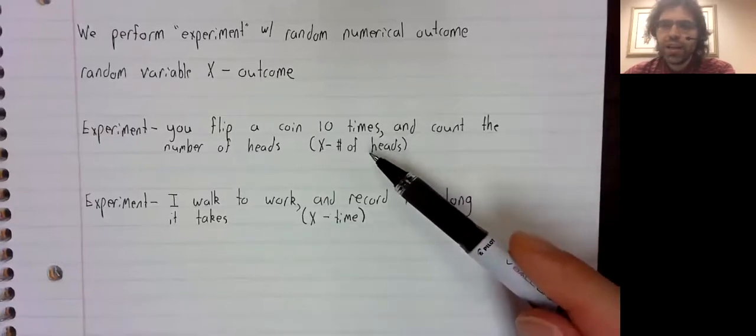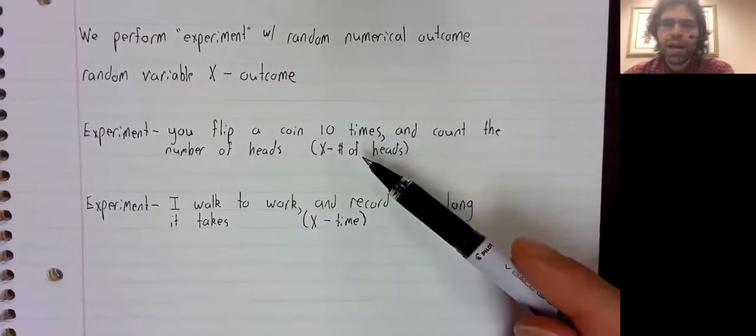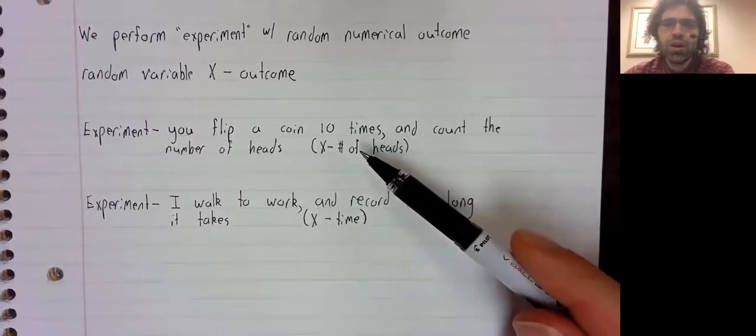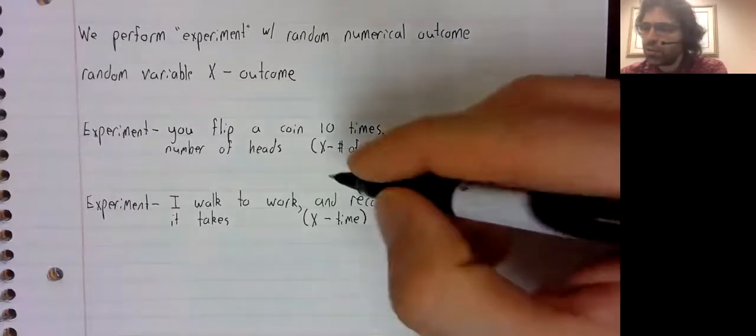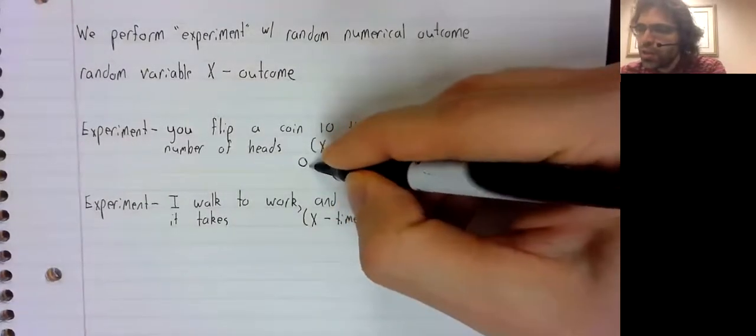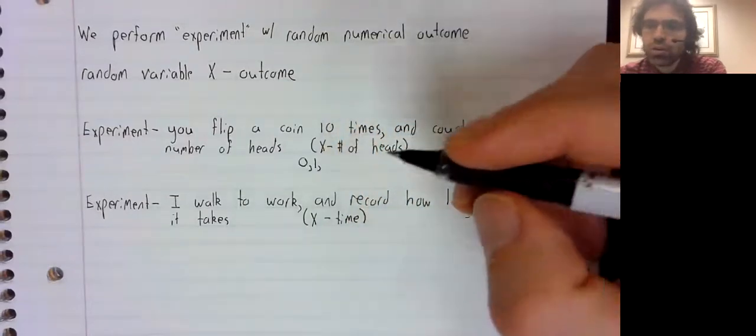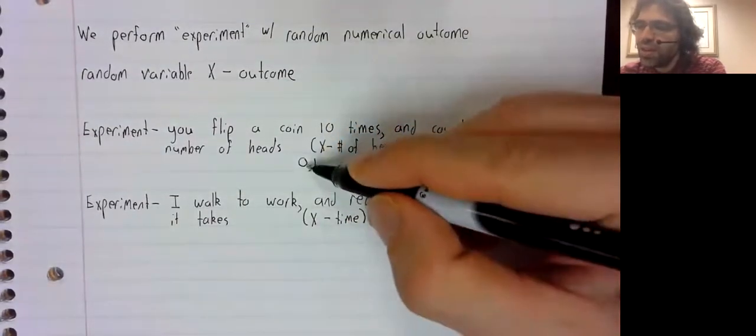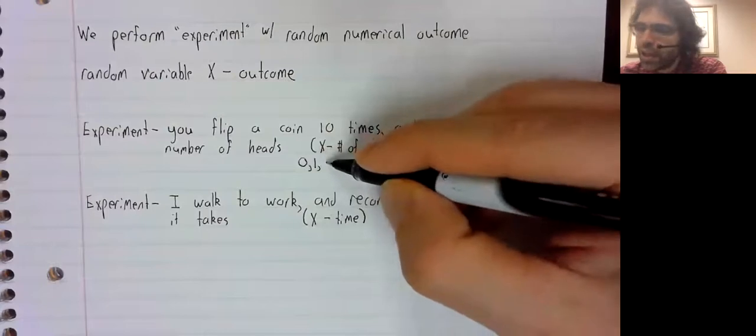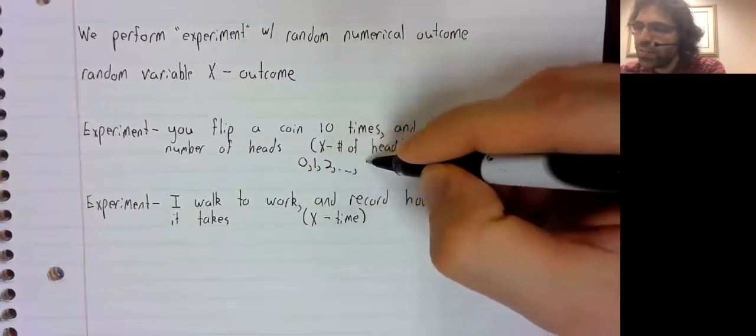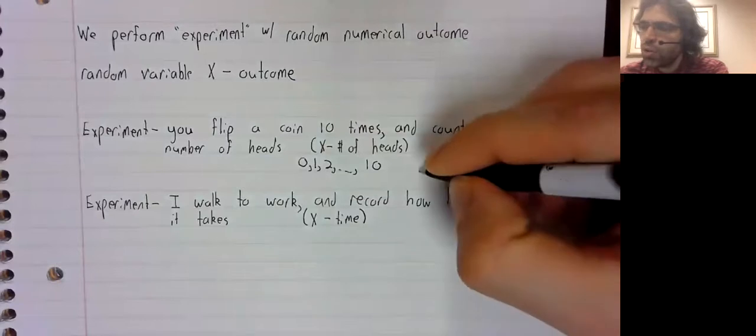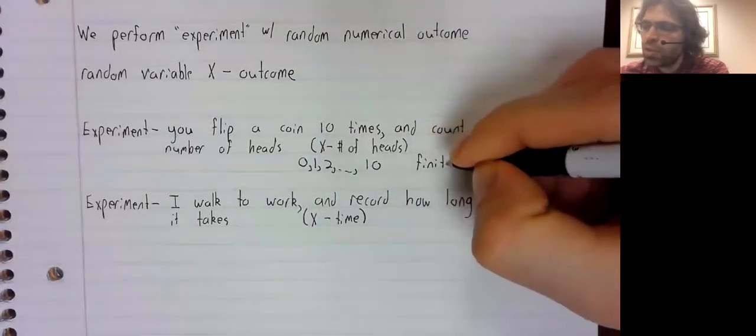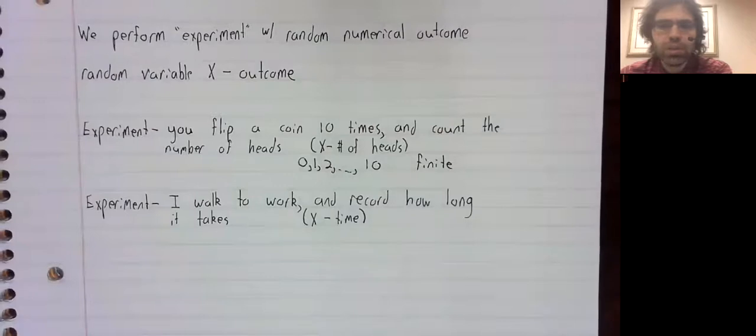This random variable X can only take on a finite number of values. You could have, although it's hardly likely, zero heads, one heads, two heads, up to 10 heads. And those are the only possible outcomes.